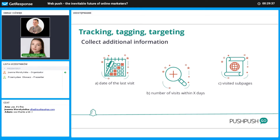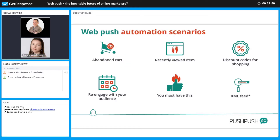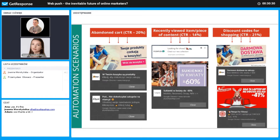You can collect data about the day of last visit, number of visits within the last seven days, visited sub-pages, and so on — all of which allows you to build advanced web push automation scenarios. The most popular scenarios widely used for e-commerce include: abandoned cart, recently viewed item, discount codes, engagement re-activation, and XML feed. The next slides show real market examples of how these automation scenarios were implemented by different companies.